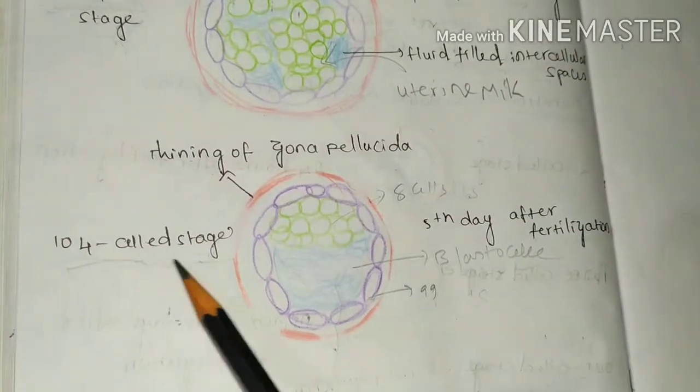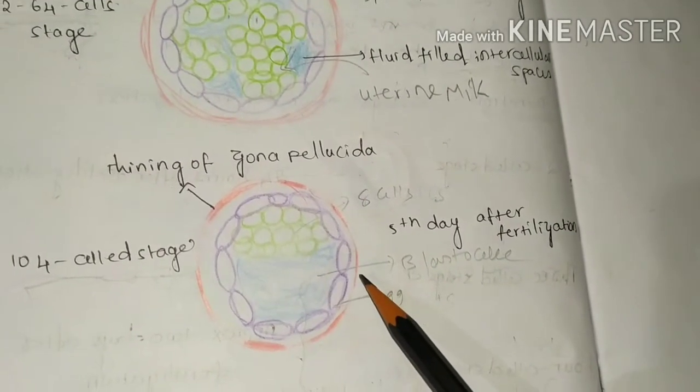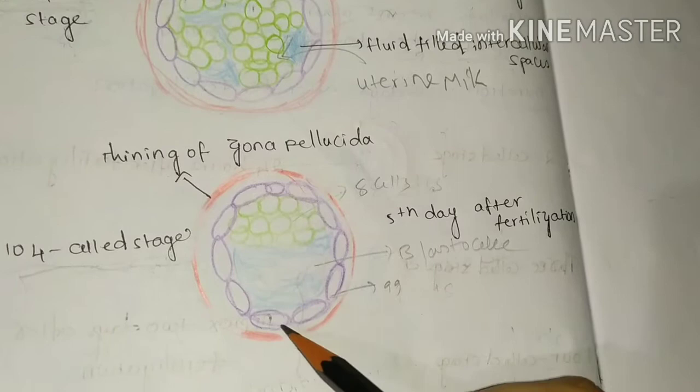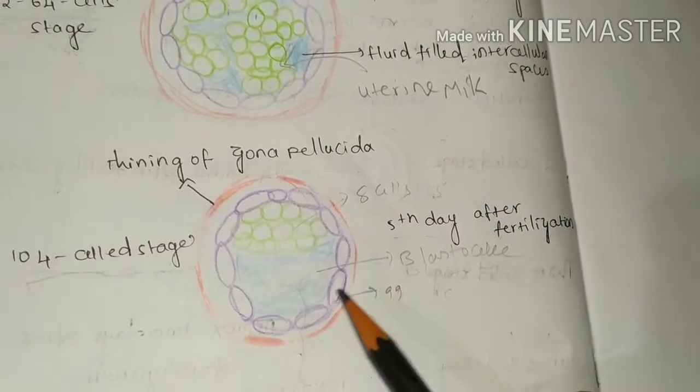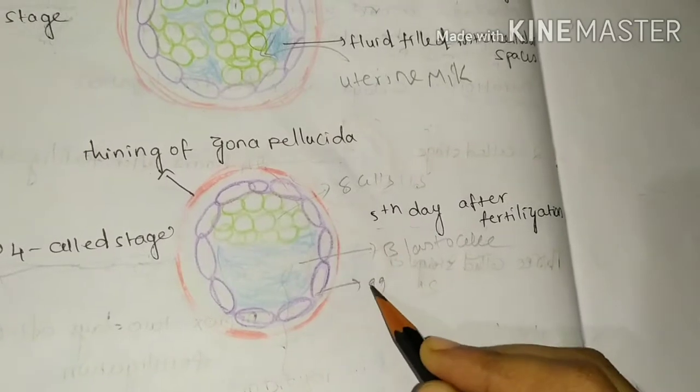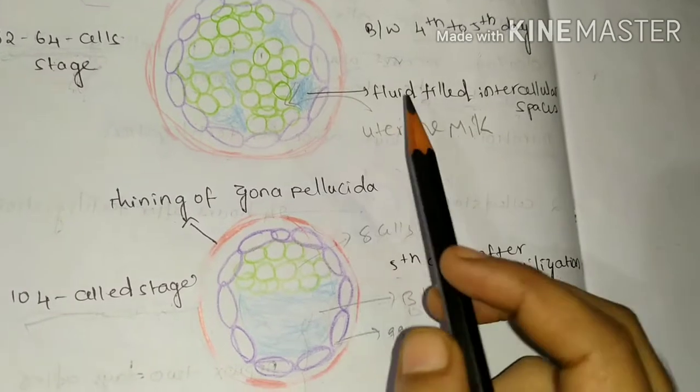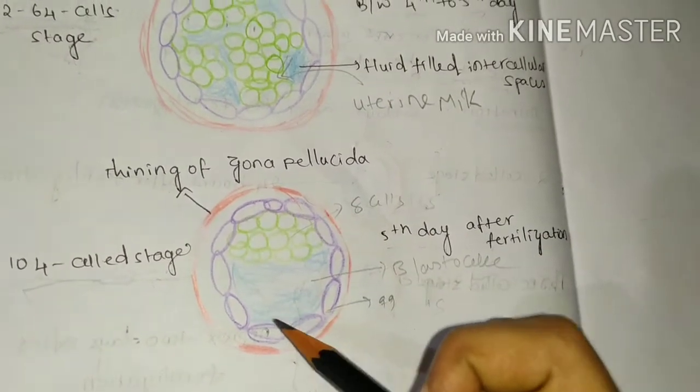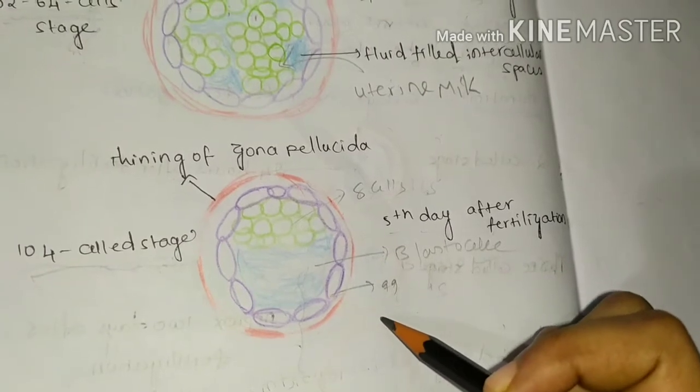Next stage is 104-cell stage. In this stage, thinning of zona pellucida is observed due to the production of trypsin-like enzyme by these trophoblast cells. And these stages are observed after fifth day after fertilization. The total number of trophoblast cells is 99, and the total number of inner cell mass is 8 cells. And the small fluid-filled intercellular spaces become single cavity. This is called blastocyst. And this stage is called early blastocyst.